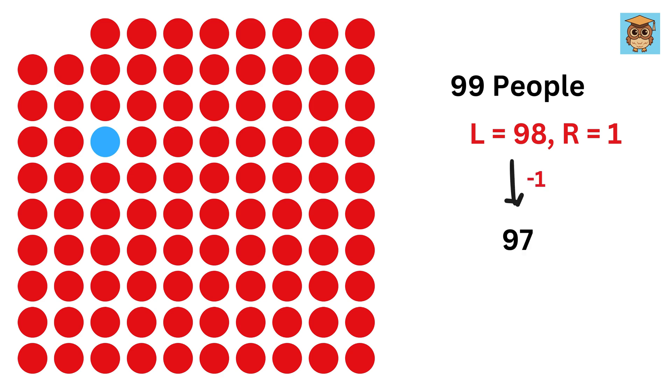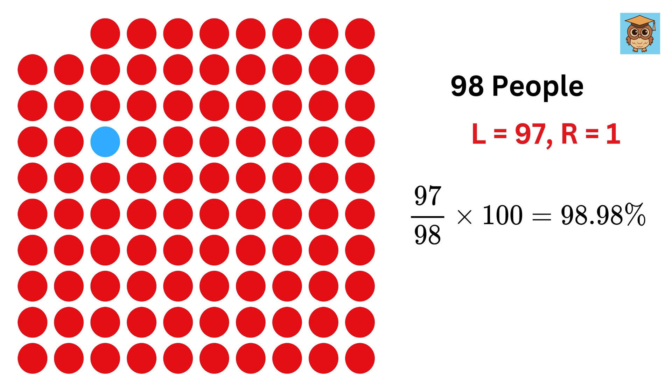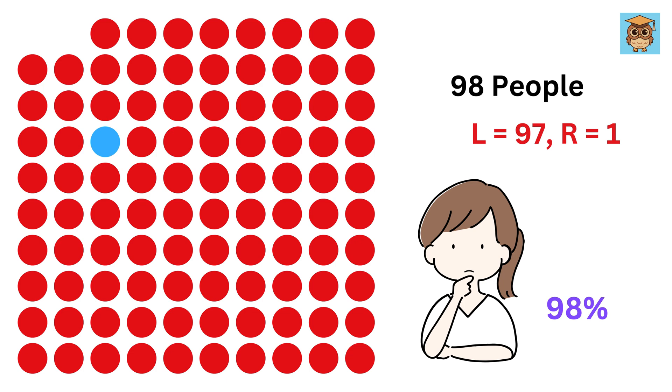Now, we have 97 left-handed and a total of 98 people. This gives us 97 over 98 times 100, or 98.98, which is still far away from 98%, but we can see that the percentage reduced. So, what do you think? Can we ever achieve this 98% by removing left-handed people one by one?